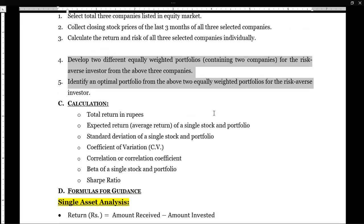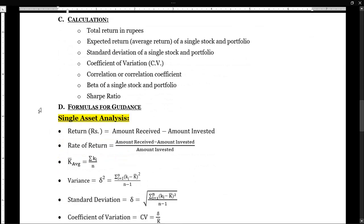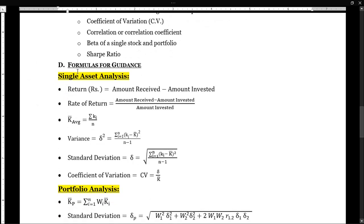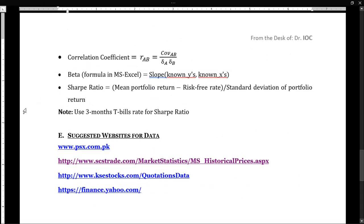We'll calculate the return in rupees, then the expected return or average return — the rate of return — for a single asset and a portfolio. Then the standard deviation and the coefficient of variation, which represent the risk of a single stock and a portfolio. Then the correlation coefficient, then the beta of a single stock or portfolio, which is the sensitivity, and ultimately the Sharpe ratio to identify the optimum portfolio. These formulas are provided for your guidance — some belong to single asset analysis and the remaining are for portfolio analysis. I'll be using three-month T-bills as the risk-free rate for the Sharpe ratio.